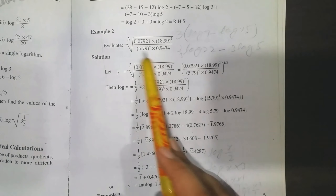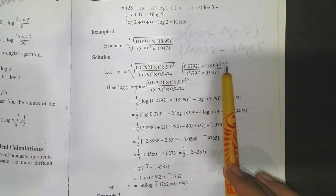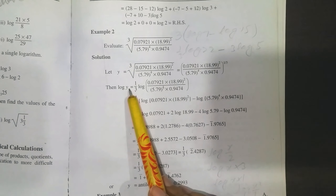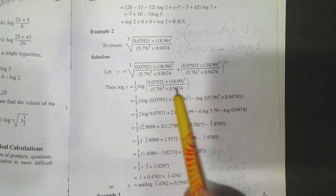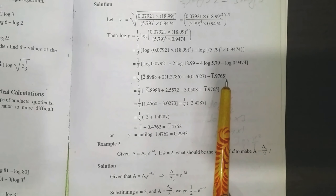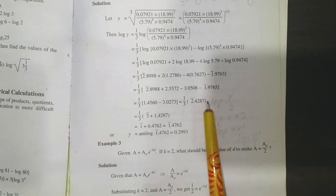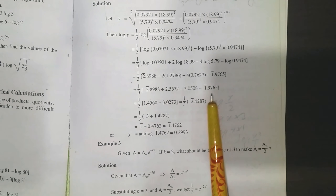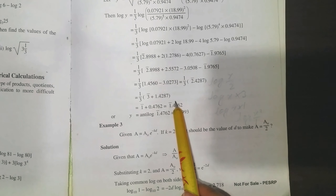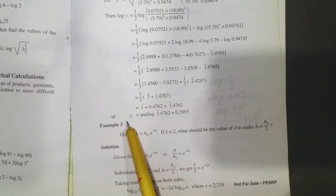Example 2: we have to evaluate a given expression. Suppose it equals y and take log of both sides. Using the power rule, bring the power (1/3) to the front: log(y) = (1/3) × log of that number. Applying further log laws and simplifying through arithmetic, we find log(y). At the end, we always take antilog on both sides to find y itself, not log(y).